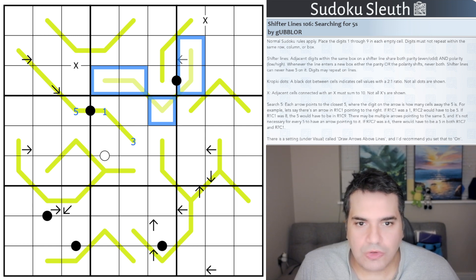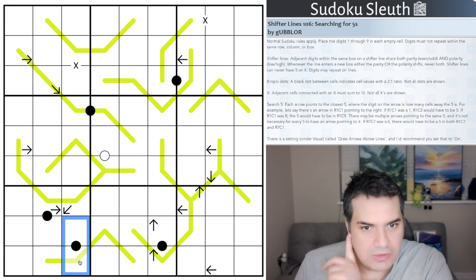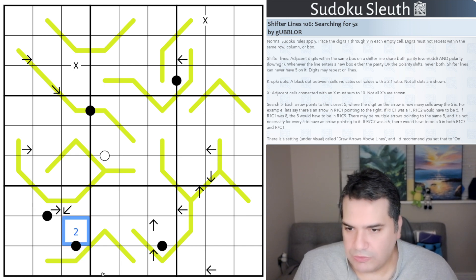Then we have Kropki dots, X's and search fives. So let's start with Kropki dots. This is probably the more familiar one. We've got essentially black dots have to be in a, any black dots that are essentially joining two cells. That means these two cells are in a two to one ratio. That could be, for example, if this was a two, this could be literally two to one, or it could be one and four. As long as one cell is double the other, you'll be fine.